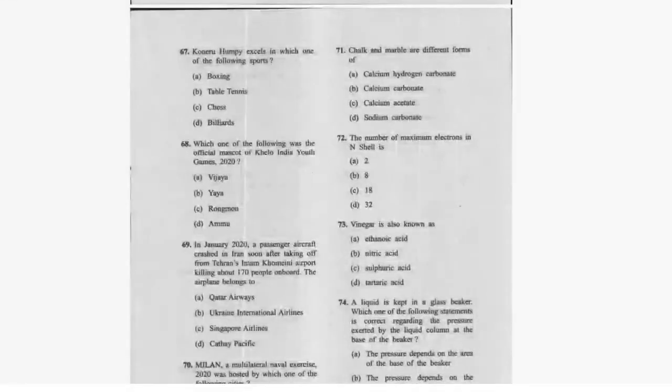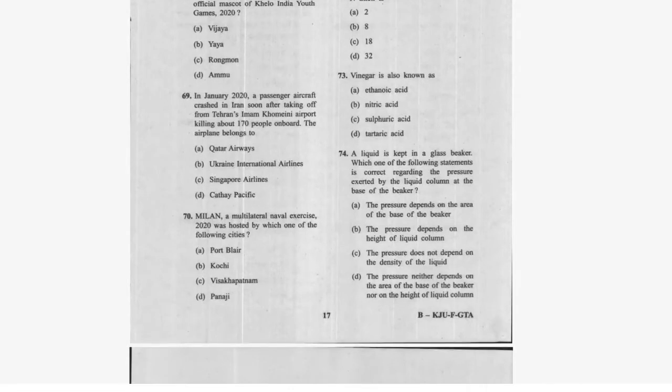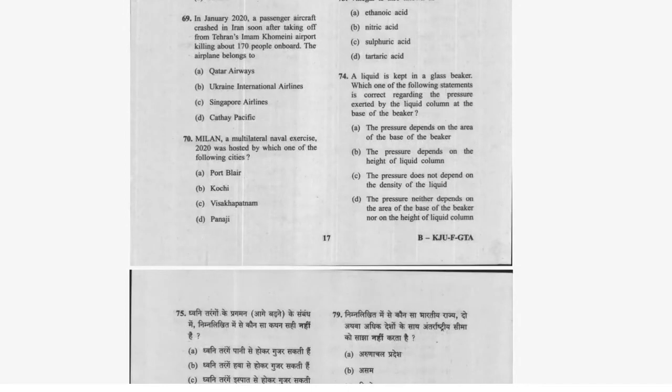Question 70: Chalk and marble are different forms of calcium carbonate — option B. Question 71: The maximum number of electrons in the N shell is 32 — option D. Question 72: Vinegar is also known as ethanoic acid. Question 73: A liquid is kept in a glass beaker — the pressure depends on the height of the liquid column — option B is correct.